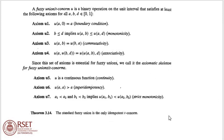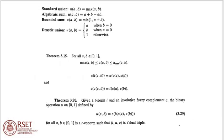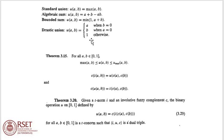The standard fuzzy union is the only idempotent T-conorm. Other well-known T-conorms are: standard union U(A,B) = maximum of A and B; algebraic sum U(A,B) = A plus B minus A times B; bounded sum U(A,B) = minimum of 1 and A plus B; drastic union U(A,B) = A when B = 0, B when A = 0, and 1 otherwise. Also, the complement of U(A,B) equals U(C(A), C(B)).